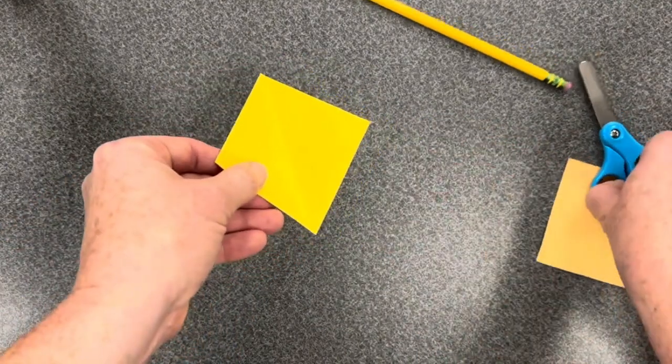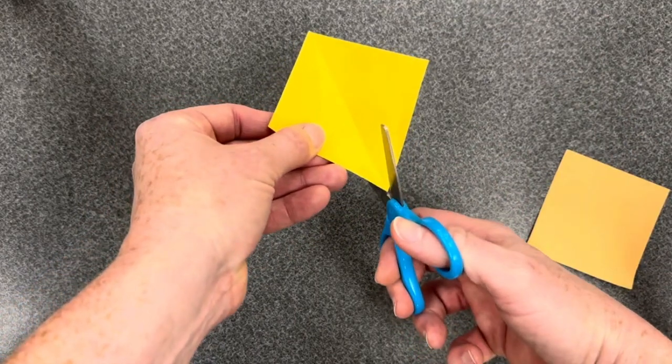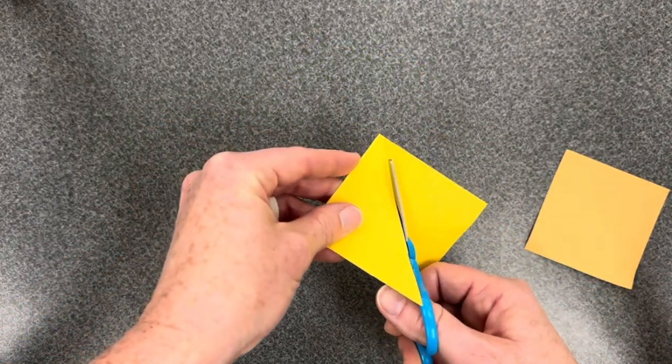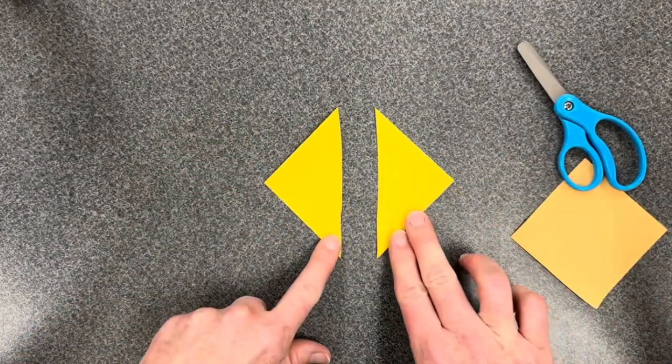Unfold, feed the paper shape into the back of the scissor mouth, and squeeze until you cut across to create two triangles.